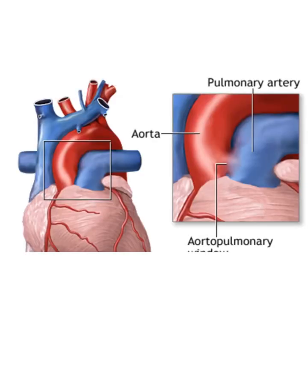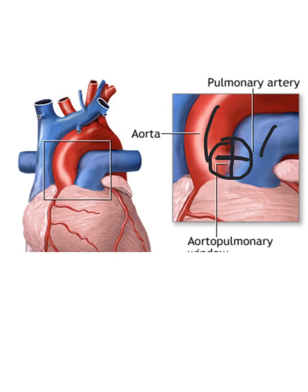On the left you can see a picture where they're basically showing you where they're gonna zoom in on, and on the right you can see the area that they zoomed in on. Here you can see the aorta and the pulmonary artery, and you can see the AP window right here — the connection between the two. There should be no shunting here; the wall should be closed off. Obviously this is going to allow a ton of blood to shunt forward into the pulmonary artery.